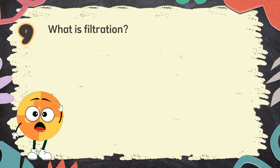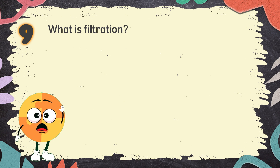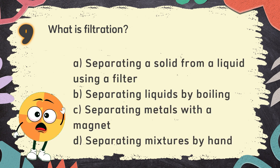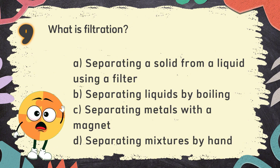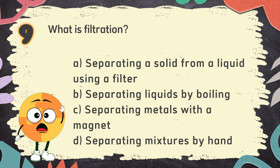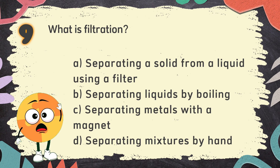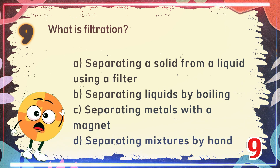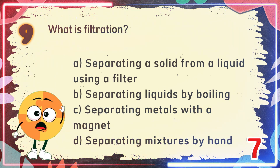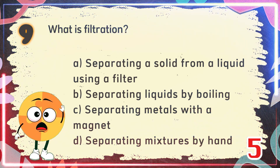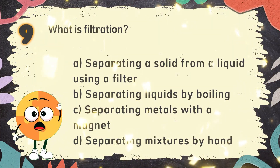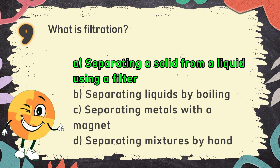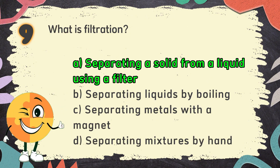Number 9. What is filtration? The choices are: A. Separating a solid from a liquid using a filter. B. Separating liquids by boiling. C. Separating metals with a magnet. D. Separating mixtures by hand. The correct answer is A: Separating a solid from a liquid using a filter.